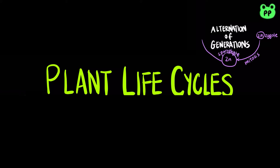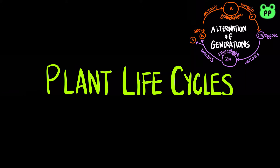The sporophyte then produces haploid spores through meiosis. Spores develop into multicellular haploid gametophyte through mitosis. The gametophyte then gives rise to haploid gametes through mitosis. Two gametes then combine through fertilization to generate a diploid zygote, and the life cycle starts over again.